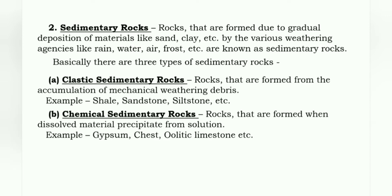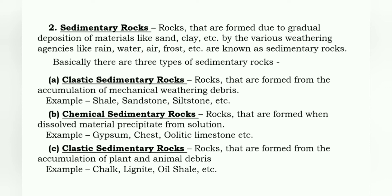Next is chemical sedimentary rocks: rocks that are formed when dissolved material precipitates from solution are known as chemical sedimentary rocks. Examples: gypsum, chert, oolitic limestone, etc. Next is organic sedimentary rocks: rocks that are formed from the accumulation of plant and animal debris. Examples: chalk, lignite, oil shale, etc.